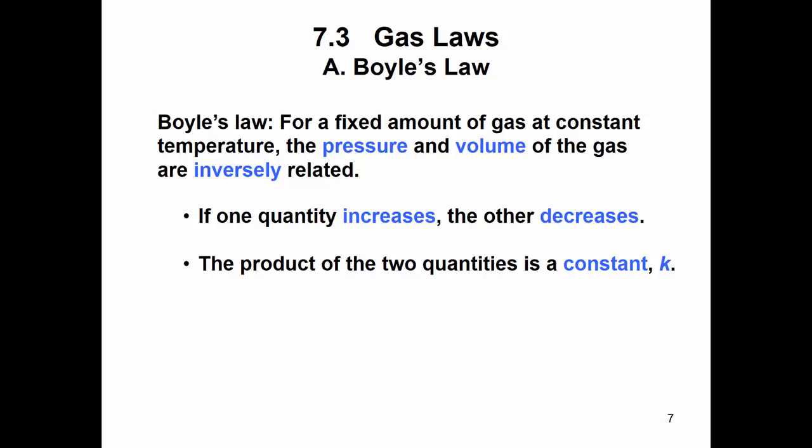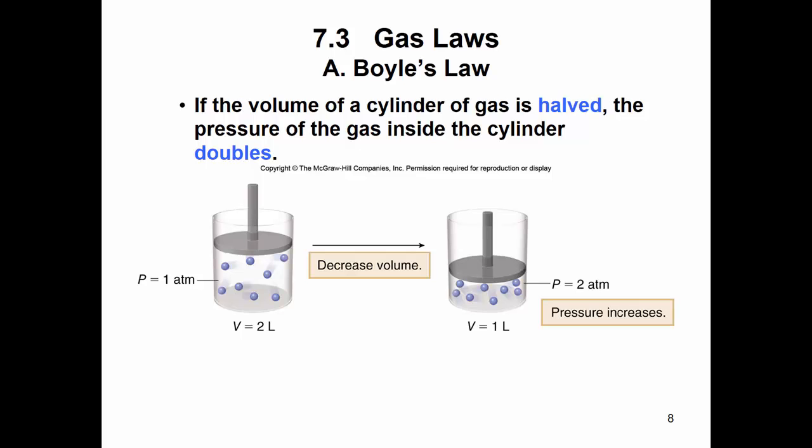And the product of the two is a constant. So if you look here, you have a cylinder and it has a pressure of one atm and the volume is two liters.